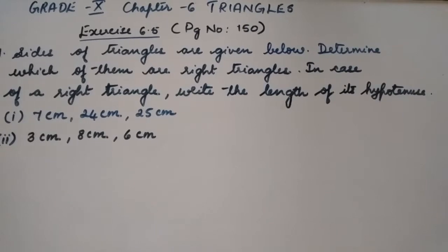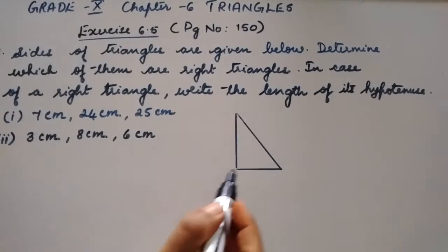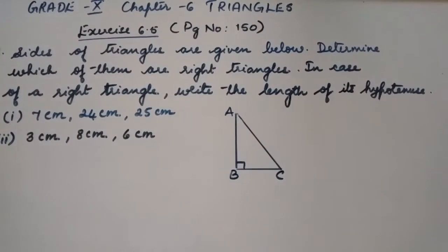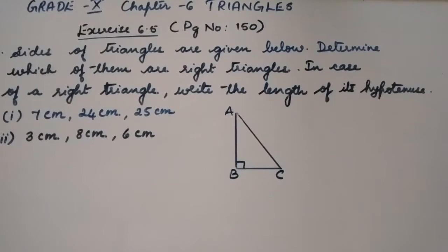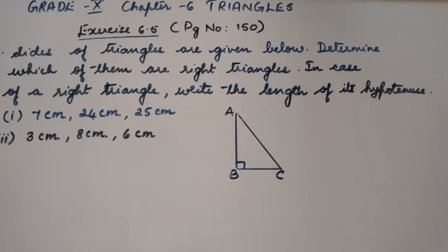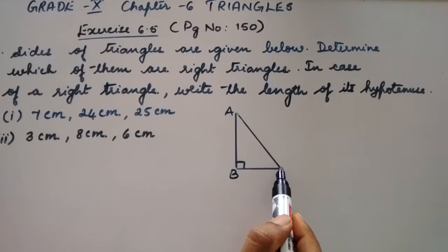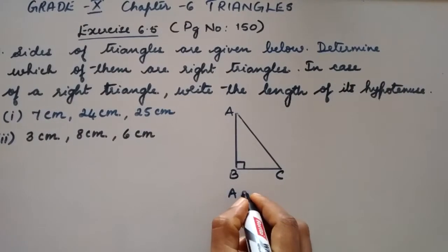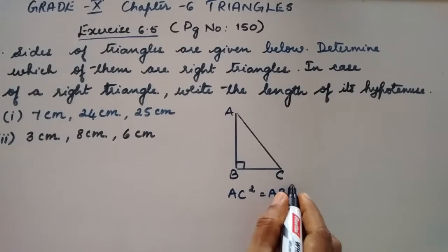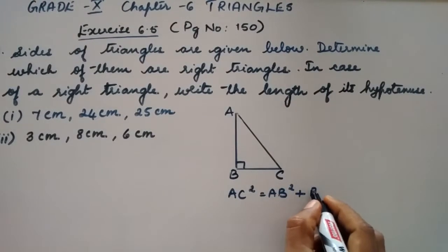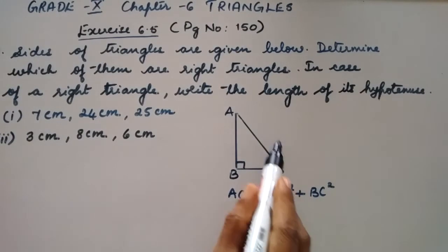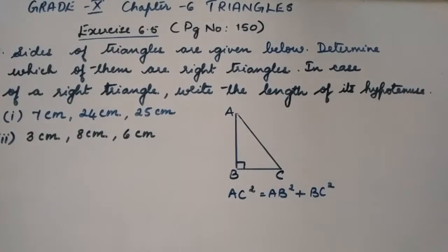First, let us draw a right triangle. This is a right triangle ABC which is right angled at B. Pythagoras theorem states that in a right triangle, the square of the hypotenuse is equal to the sum of the squares of the other two sides. That is, AC² = AB² + BC². If we prove this condition, then the triangle is a right angled triangle.